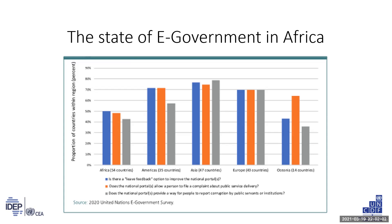Key challenges here include understanding the motivations for citizens to participate online, the reluctance from public institutions to share agenda-setting and decision-making power, and linking e-participation initiatives with formal institutional processes for people to see their impact.